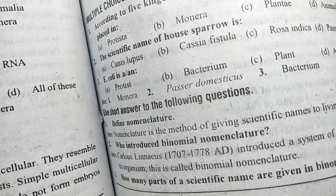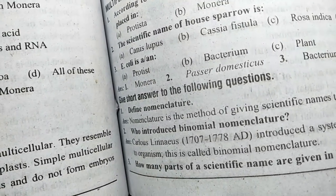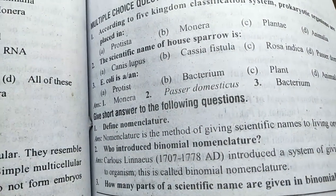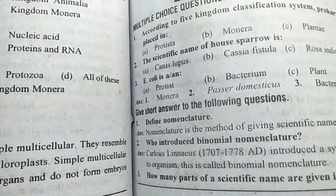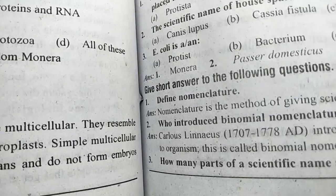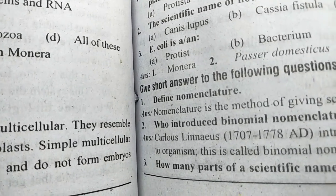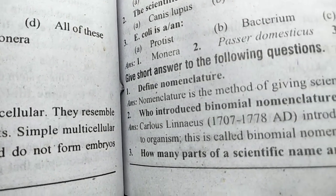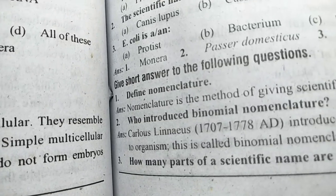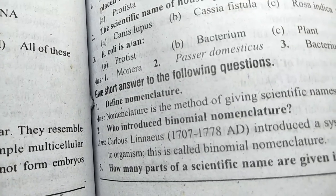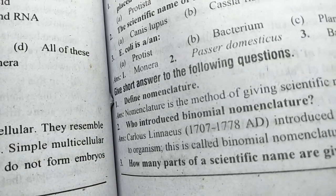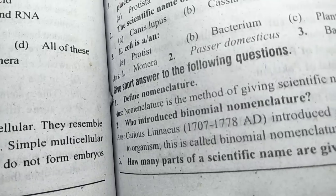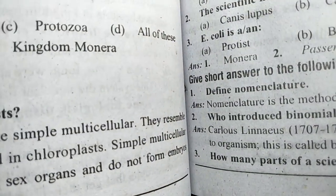Define nomenclature: nomenclature is the method of giving scientific names to living organisms. Carolus Linnaeus in 1878 AD introduced a system of giving scientific names to organisms. This is called binomial nomenclature.